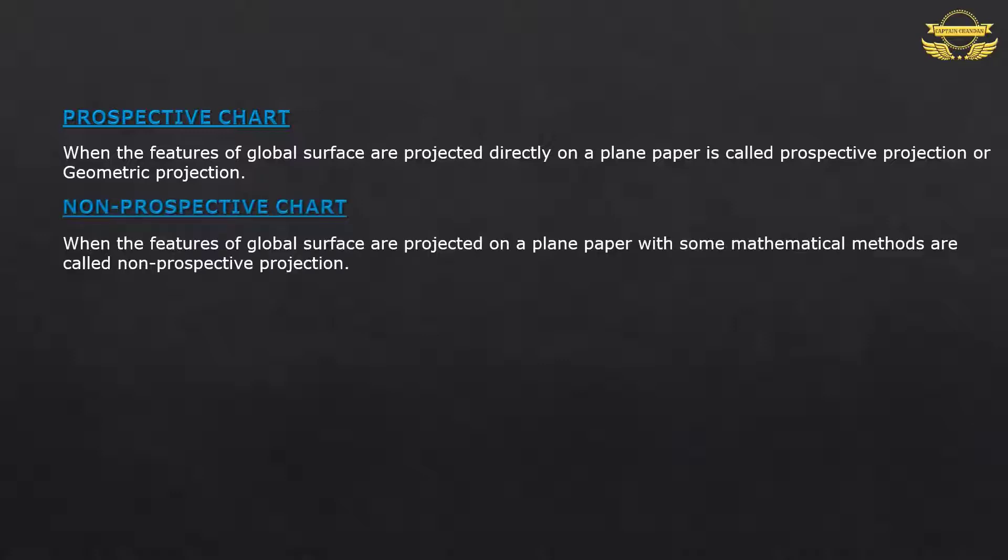Prospective Chart: When the features of global surface are projected on a plane paper with some mathematical calculations or mathematical methods, these are called non-prospective projections.